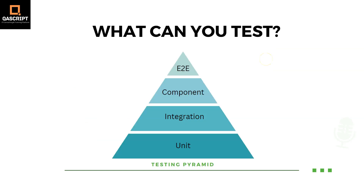Now coming to what you can test with Cypress, we need to go back to the testing pyramid. As you know, there are different testing levels or testing types which are mentioned in this testing pyramid and these are basically the unit, integration, component and end-to-end tests. Cypress offers all of these different types of testing, so you can perform all these types of testing in this particular test automation tool.